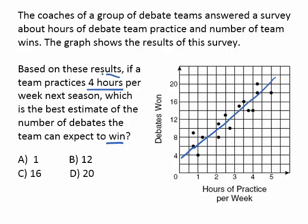In order to make a prediction for four hours, we're going to find four hours on our scatter plot and look at the label 'hours of practice per week.' We find four, and we follow four straight up until we hit our line. It looks like we hit our line right around a little bit more than 16 — so maybe 17, maybe 16, maybe 15. Somewhere in that general area is our prediction. We look at our answer choices and find the one closest to 16, which in this case is 16.